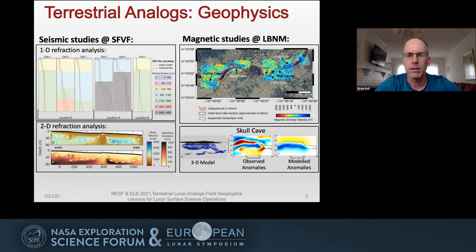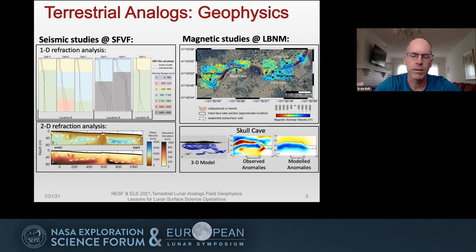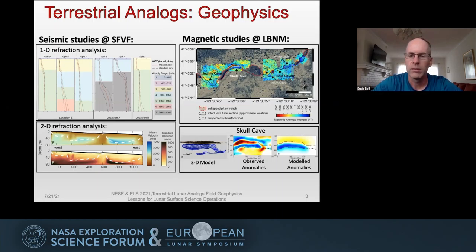At Lava Beds National Monument, I've been performing a number of surface area magnetic surveys over top of the lava tubes for a couple of years. In the upper right you can see the resulting magnetic highs and lows — cool colors for lows, brighter colors for highs — plotted over a map of the actual topography of the lava tube itself. In the lower right are results of 3D modeling done using LIDAR, allowing us to model the magnetic anomalies produced by the lava tubes themselves.